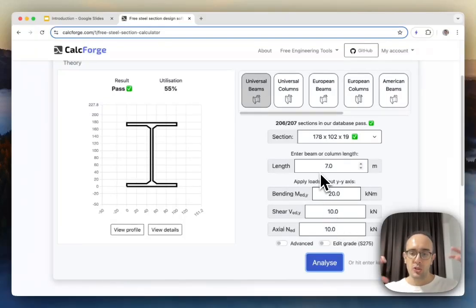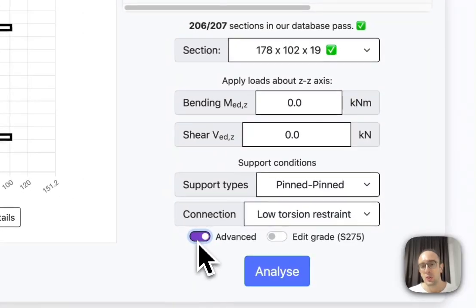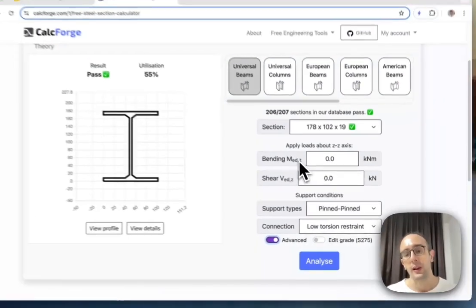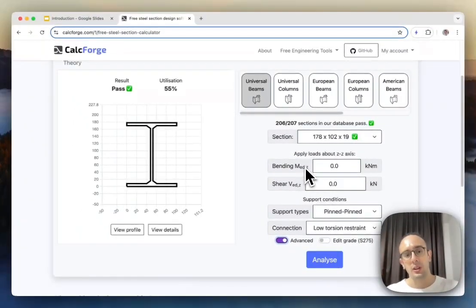So bending is how much you're actually bending the beam up and down. Shear force is how much you're applying forces which are perpendicular to the length of the beam. Axial force is either compression or pushing it in or tension. I also have these options here for advanced menu. So in advanced menu I can put bending in the other direction on the weak axis so I can bend it left to right and also put shear force on left to right and I can change the support conditions at either end of the beam.